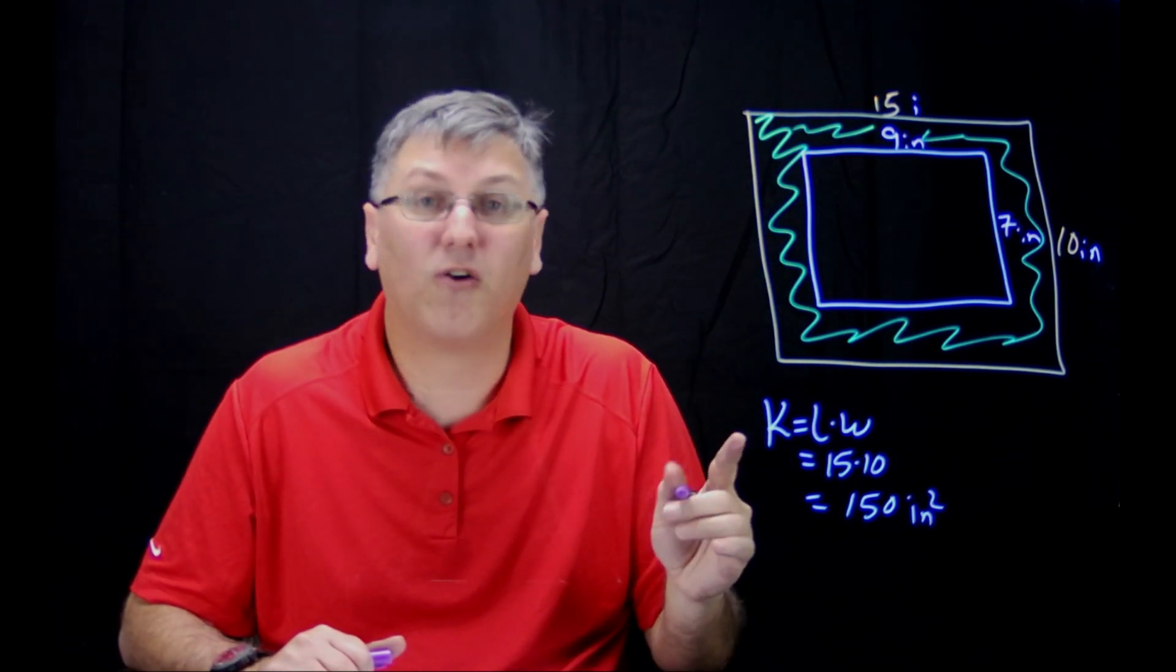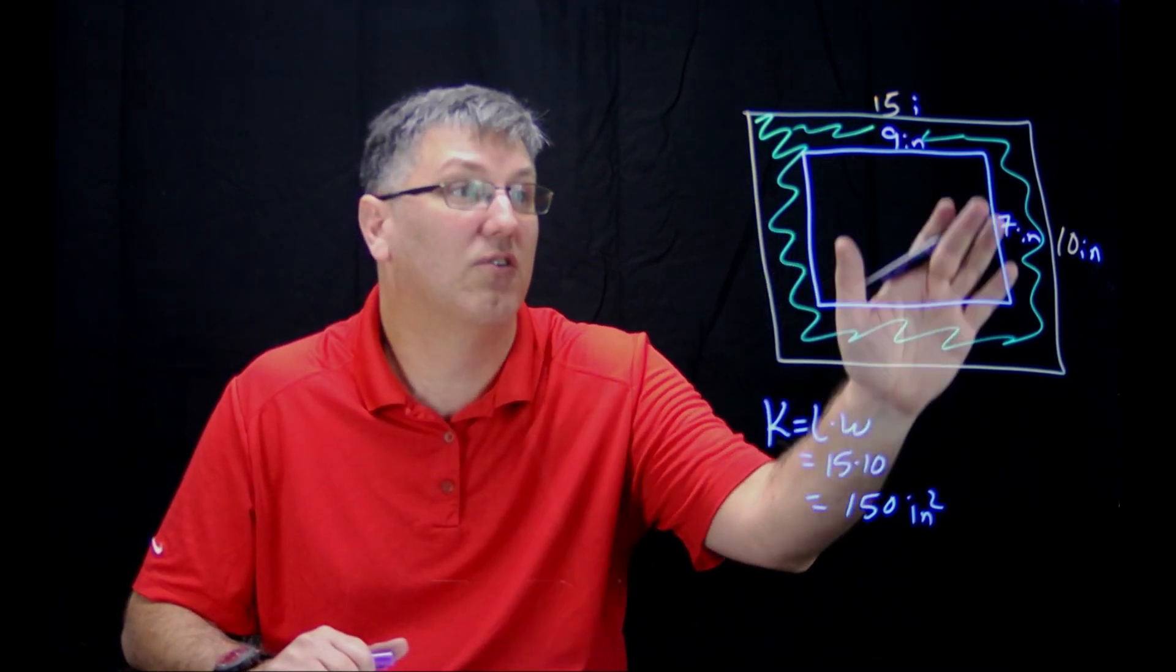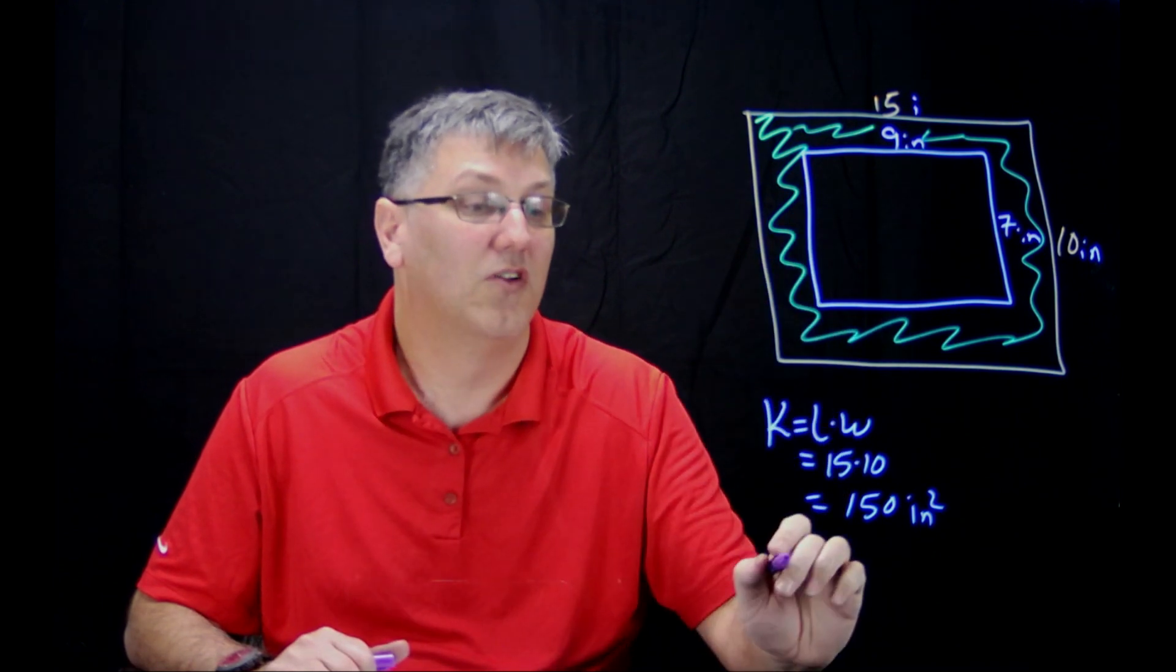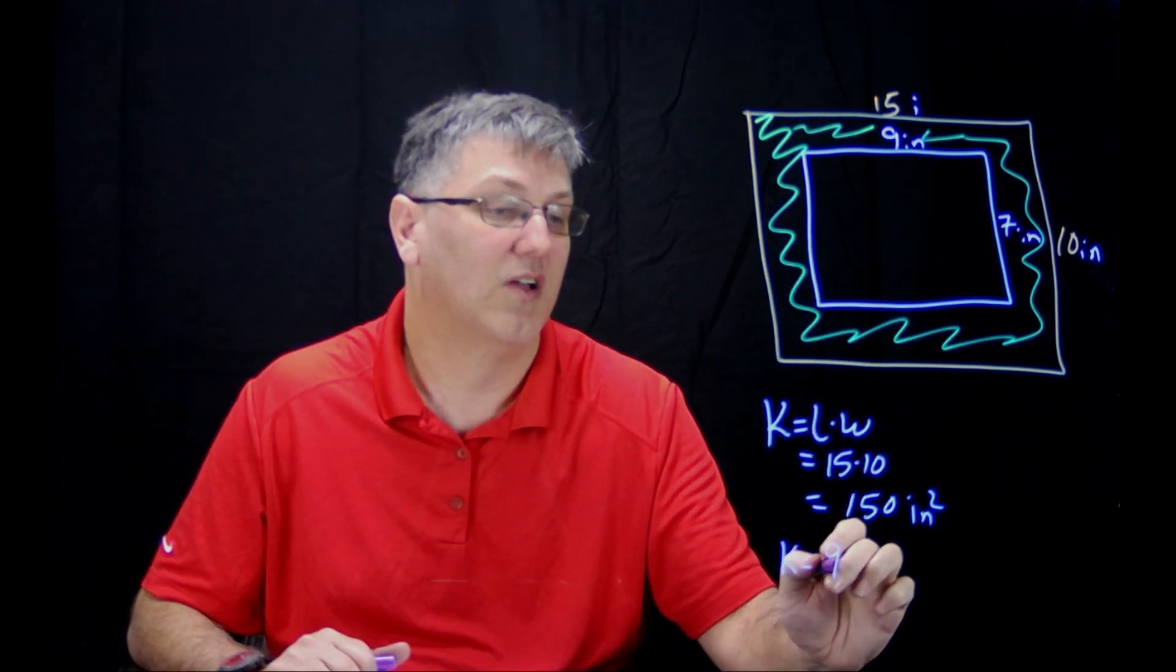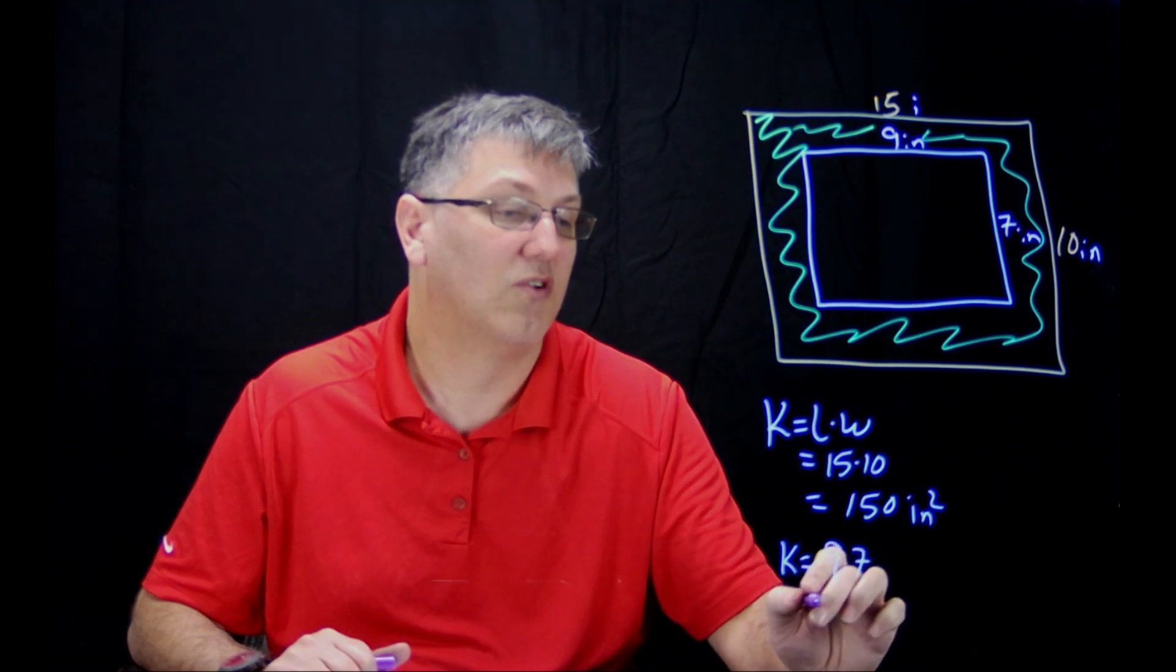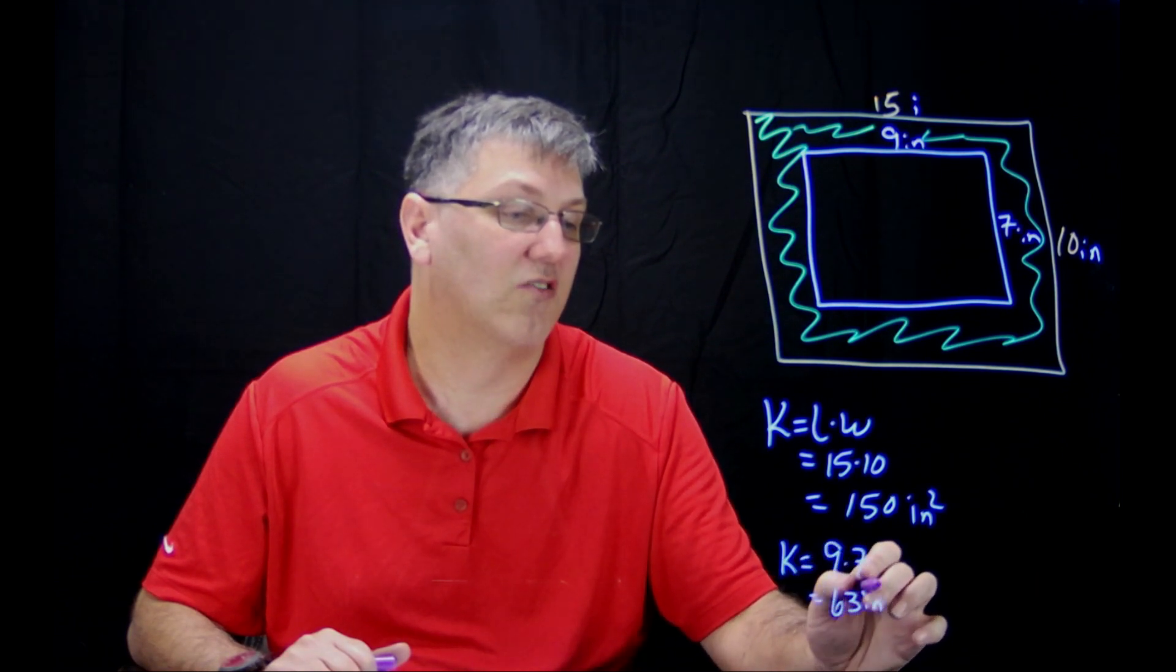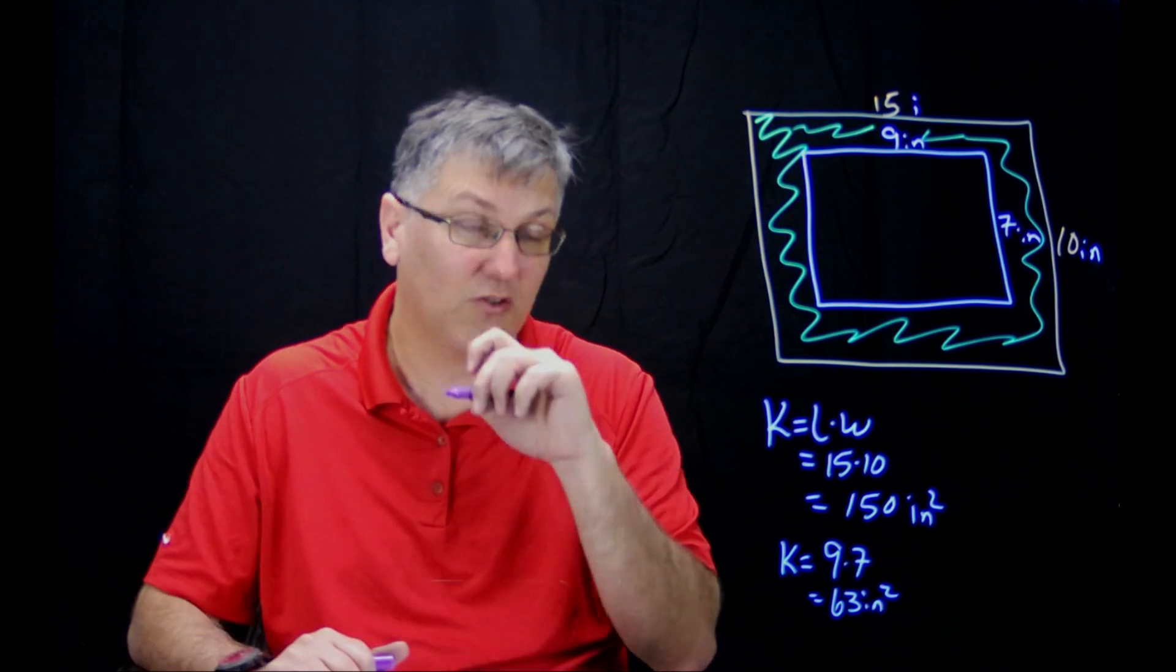All right, next thing I need to figure out, what is the area of this other part in the middle here? So that part is still length times width, so 9 times 7, which is going to give me 63 inches squared, because this is an inch times inch, which gives me inches squared.